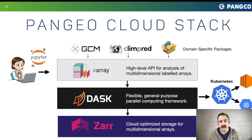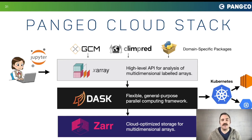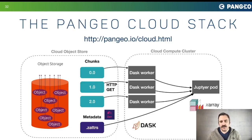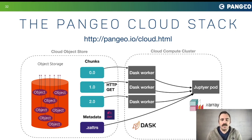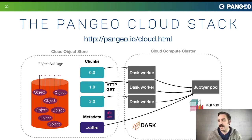On top of this foundation, it's possible to build higher-level domain-specific layers. For example, XGCM provides analysis of finite-volume data from general circulation models, and GlimPred is designed to work with forecast data. When processing data in Pangeo, a Dask cluster pulls data directly from object store in Zarr format — chunks of multidimensional arrays via HTTP — then aggregates and reduces it, sending results back to the Jupyter notebook for interactive visualization and analysis.